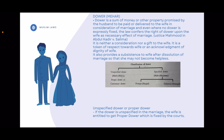Dahr also provides subsistence to a wife after dissolution of marriage so that she may not become helpless. If dissolution of marriage happens, the wife will not become helpless. Now we see the classification of Dahr. Broadly, we can specify it in two ways: the first is Unspecified Dahr and the second is Specified Dahr.